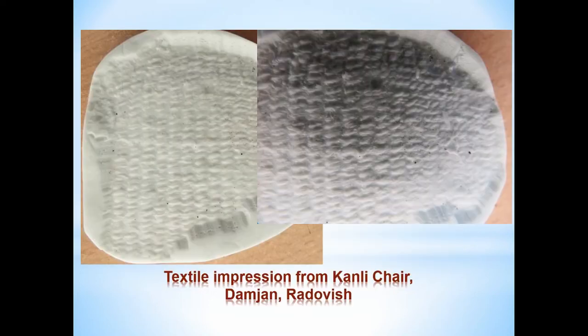I would like to single out one impression where, in the middle of the bottom, a tight simple S-twist twining was identified, but towards the edge of the fragment it looks like every thread from the warp is split into two threads, which increases the density of the structure. Further weaving continued with even thinner weft.